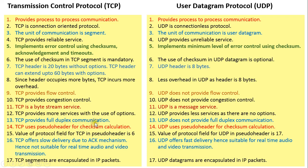TCP provides full duplex communication because both the TCP sender and receiver have send and receive windows, making it capable of full duplex operation. UDP does not provide full duplex communication. Both TCP and UDP use a pseudo header for checksum calculation — this is a similarity. The value of the protocol field for TCP in pseudo header checksum calculation is 6, whereas for UDP it is 17.